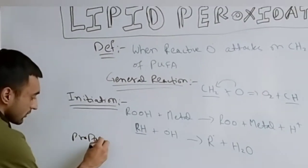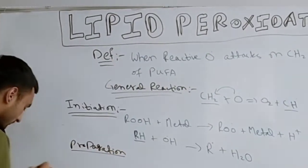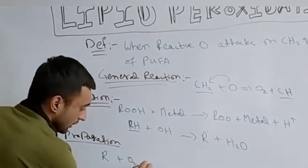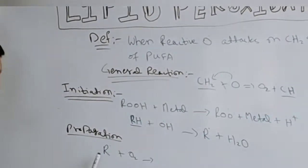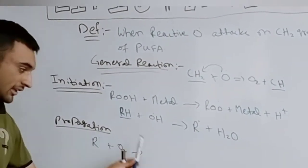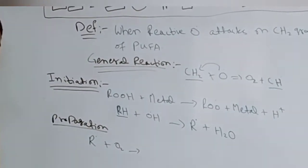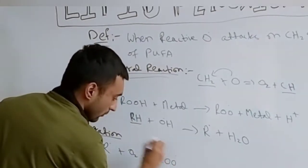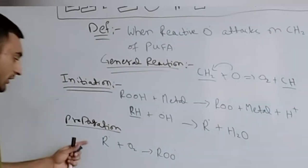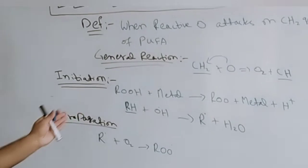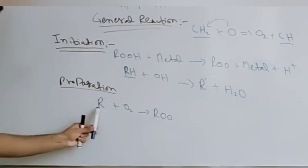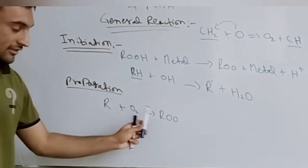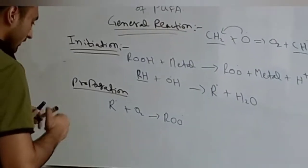After initiation we have propagation. In propagation, this reactive free radical reacts with a stable oxygen molecule. An important point to keep in mind: whenever a free radical combines with a stable molecule, the result is always another free radical. So this reaction is propagated and proliferates multiple times, with each free radical reacting with another stable molecule.